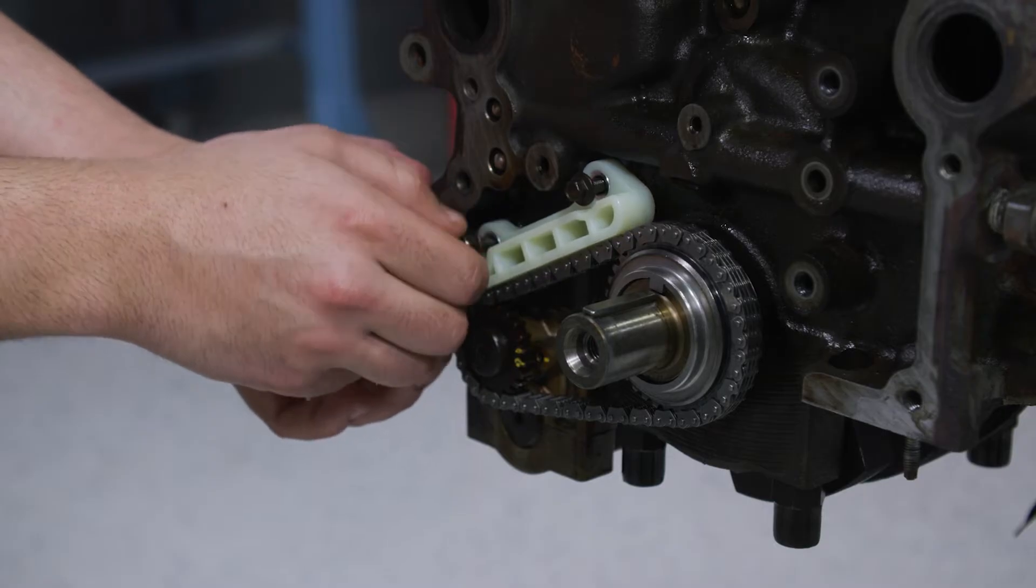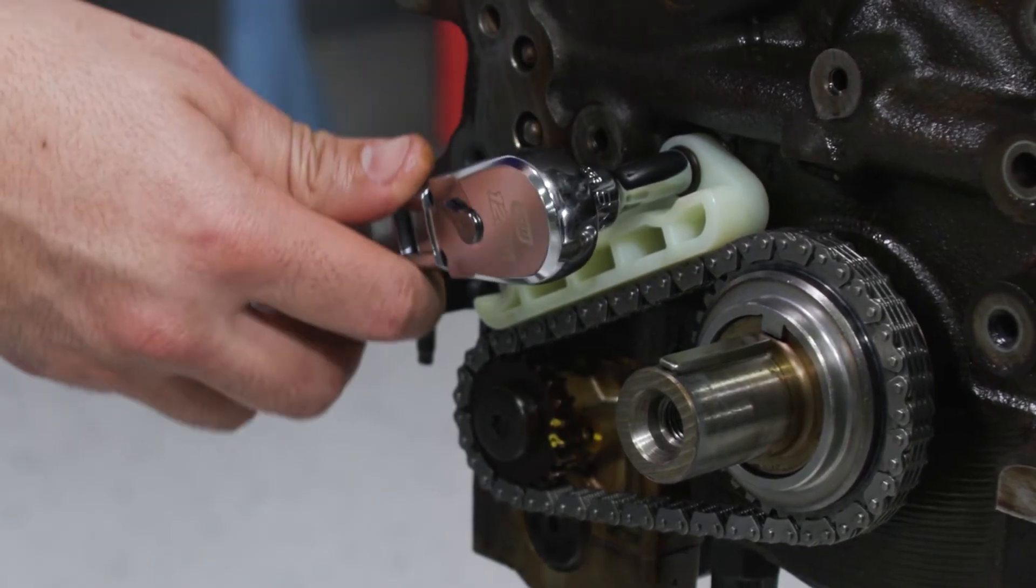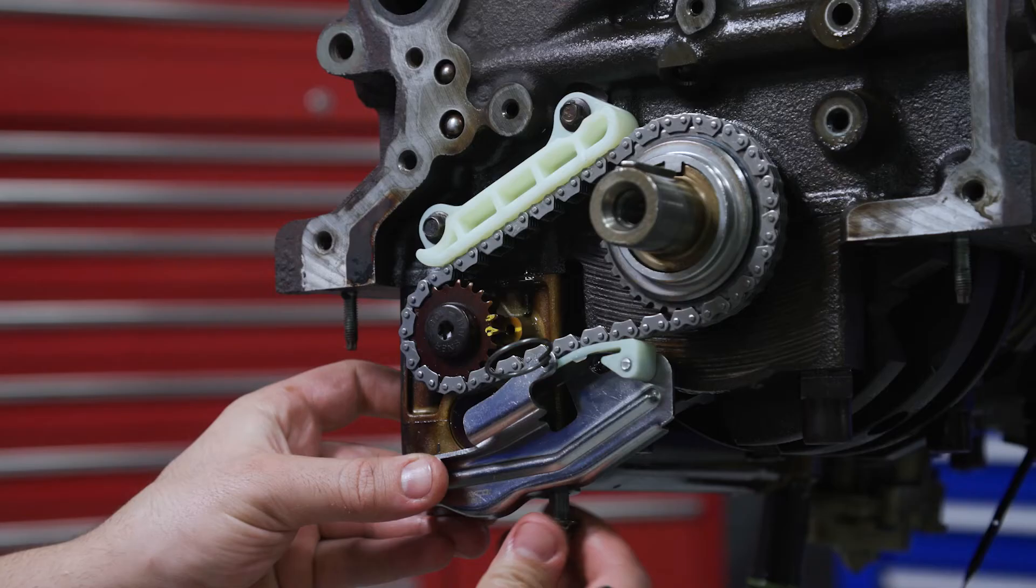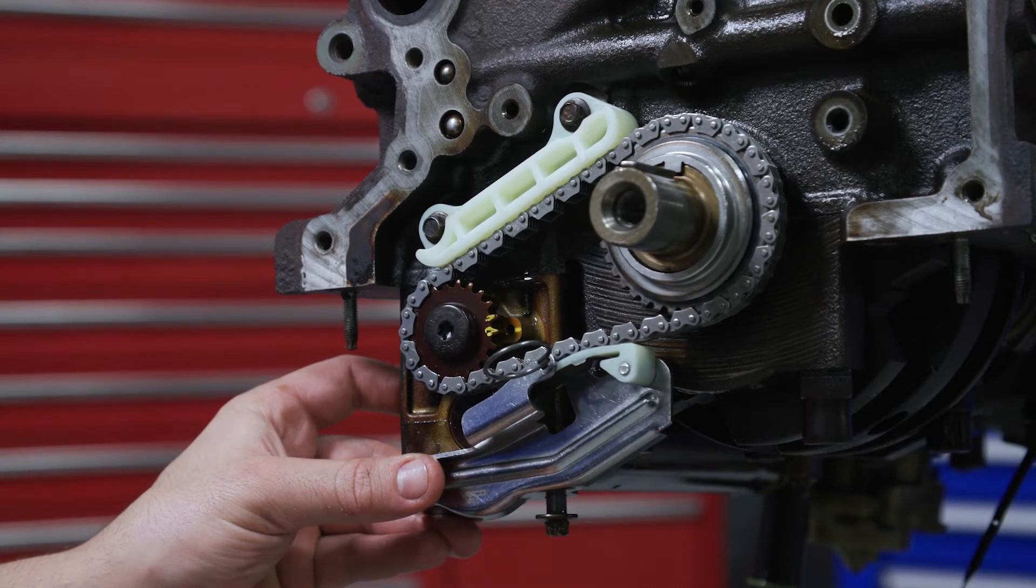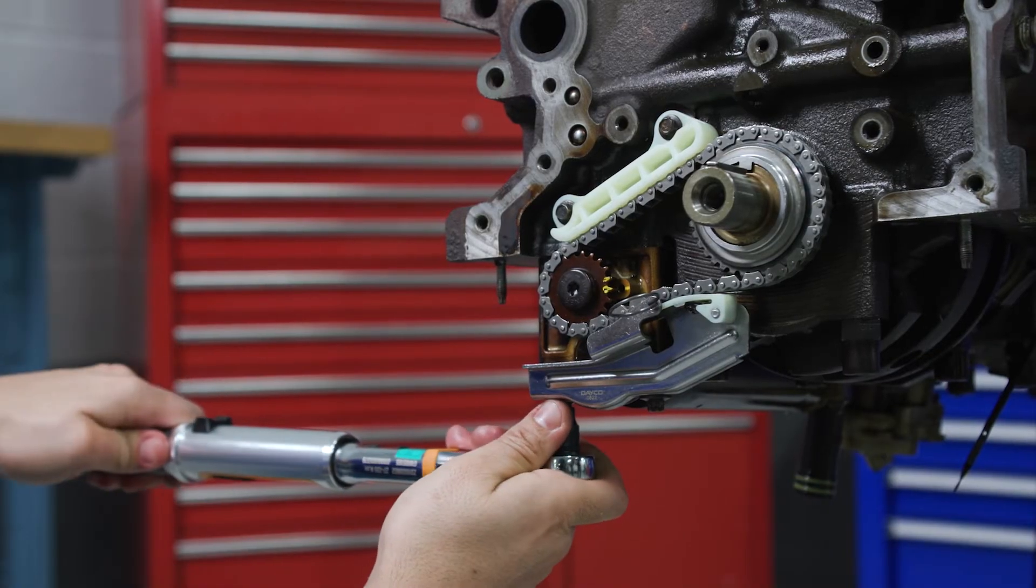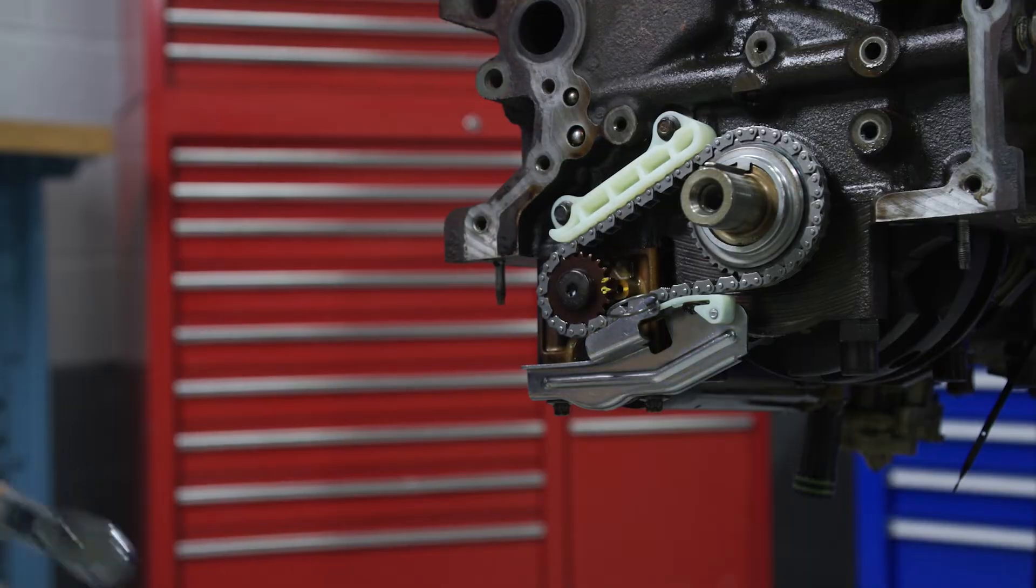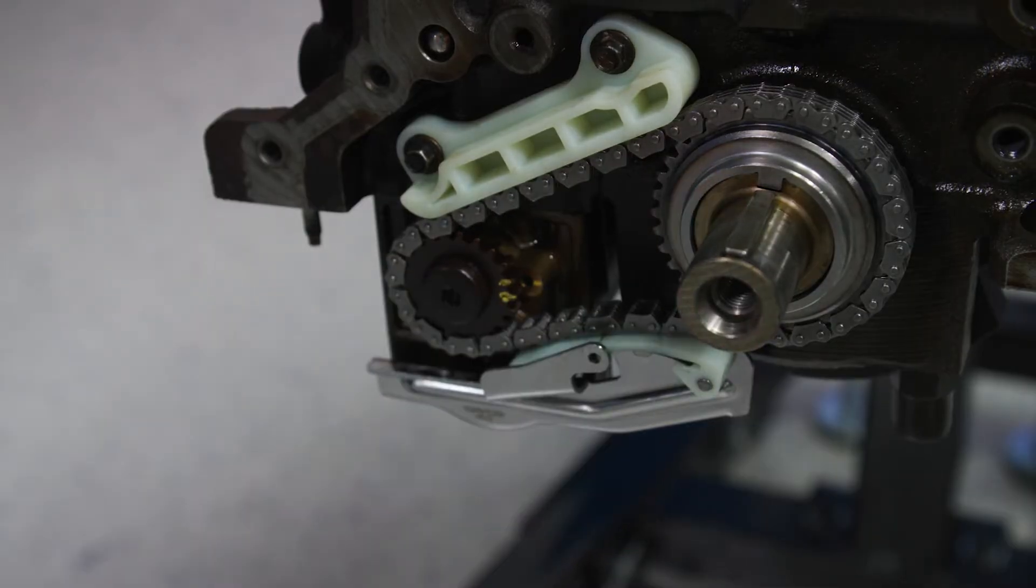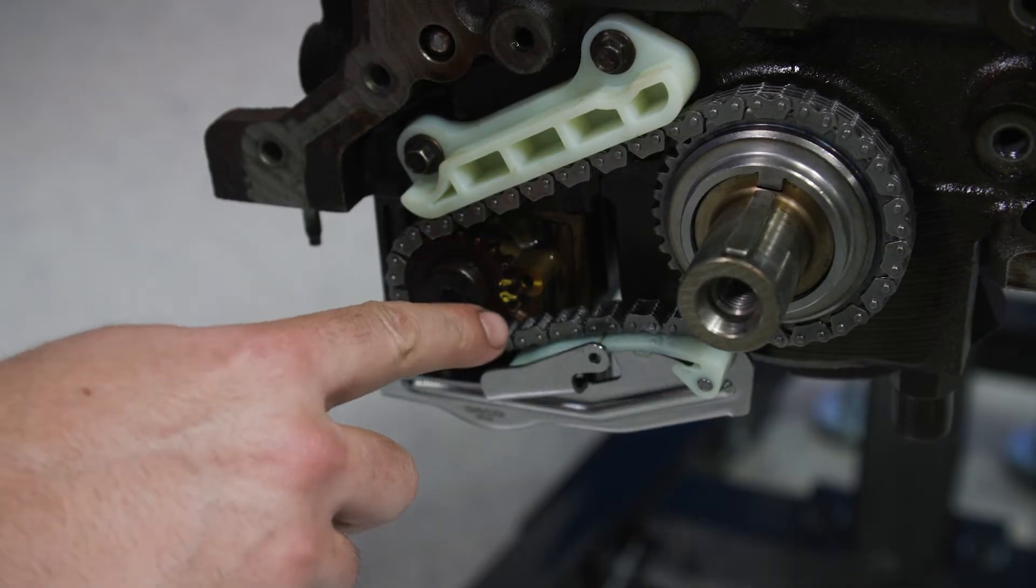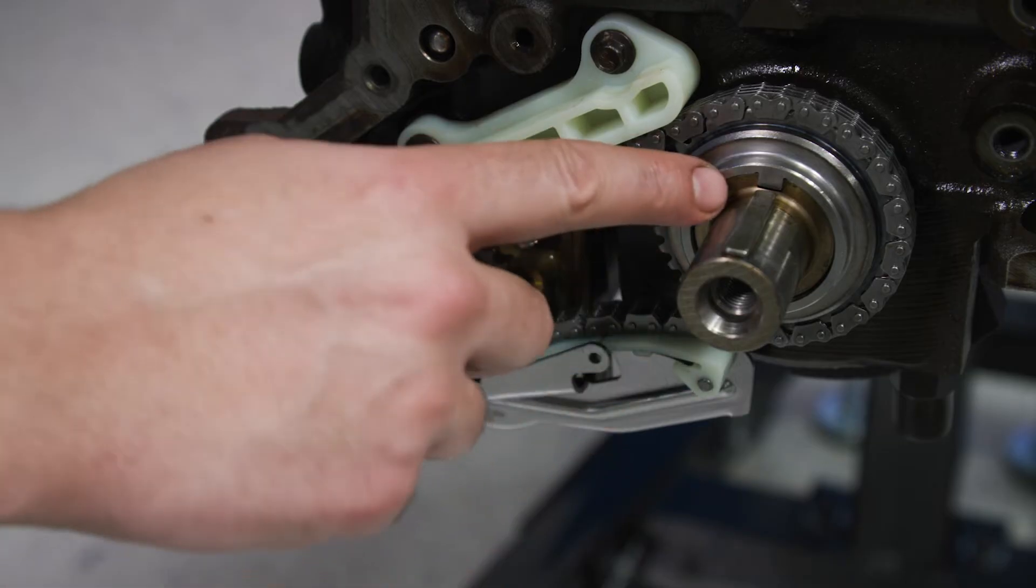Then install the upper guide bolts and torque the bolts to 89 inch-pounds. Now install the balance shaft tensioner and tighten its bolt to 21 foot-pounds. Next, remove the tensioner retaining pin and then verify your balance shaft timing marks are lined up correctly.